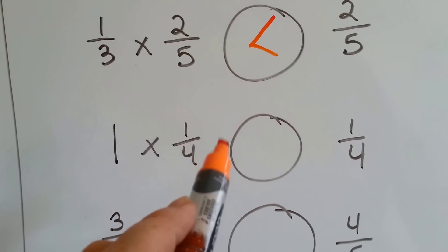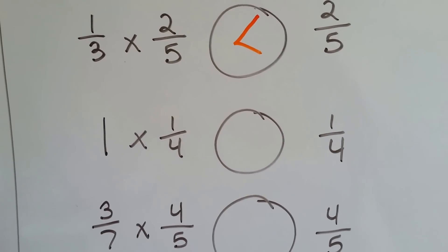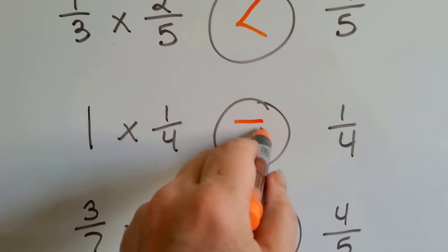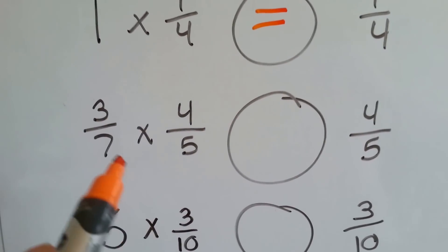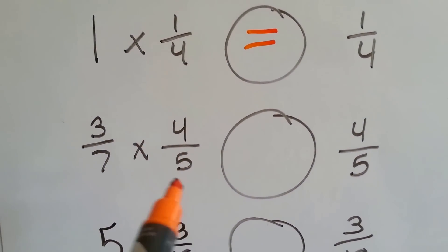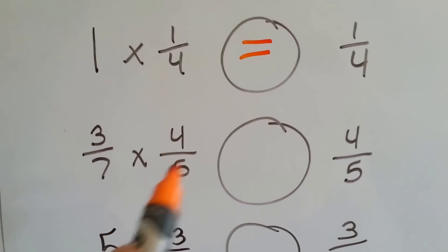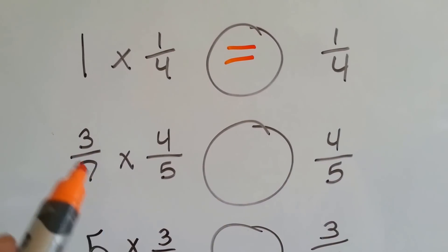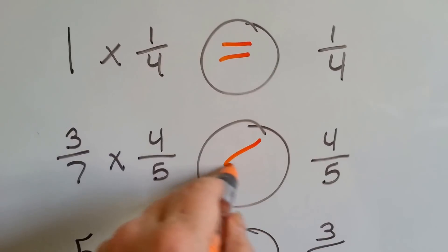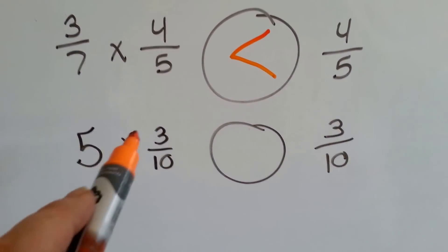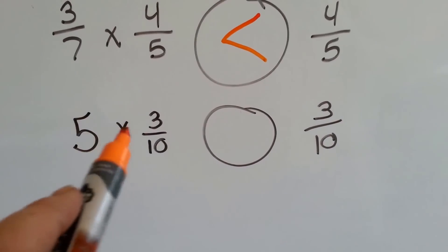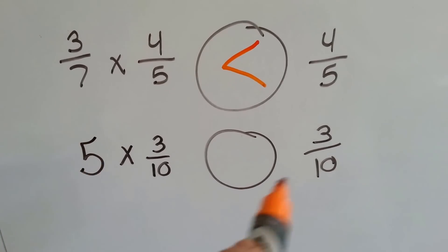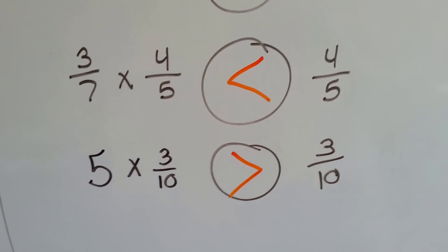How about 1 times one-fourth? Is it going to be less than, greater than, or equal to? If you remember that when you multiply something by 1 it stays the same, and you said equal, then you were right. How about three-sevenths times four-fifths? Is this product going to be bigger, smaller, or equal to four-fifths? Fraction times fraction — it's going to be smaller, so four-fifths is going to be bigger. How about 5 times three-tenths? Which is going to be bigger — the product or the three-tenths? You multiply by a whole number, it's bigger than the fraction, so if you said it's greater than, you're right.